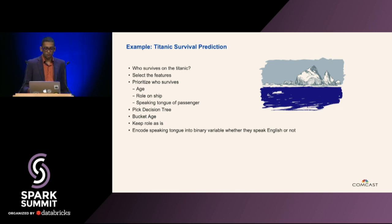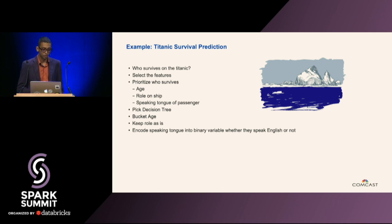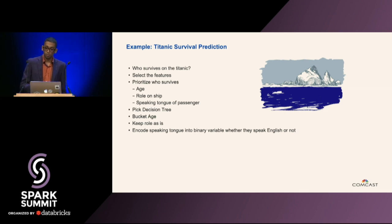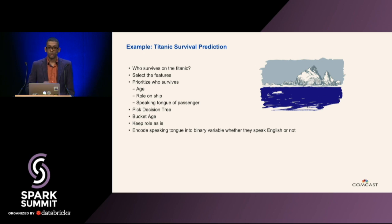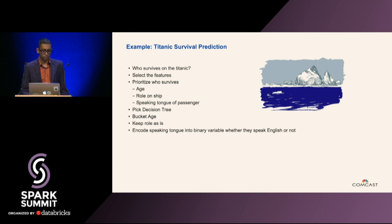But using domain knowledge, let's pick three features: the age, what job the person had on the ship, and what language that passenger spoke. If you bucket on age, you know that younger people tended to be prioritized for lifeboats. The role is useful because engineers and the captain typically go down with the ship, while passengers are prioritized to get off. And what language they spoke could be encoded as whether they spoke English or not — you just need to know if they understood the crew's instructions. Hopefully this example gives you some overview of how much information there could be and why you need to select it.